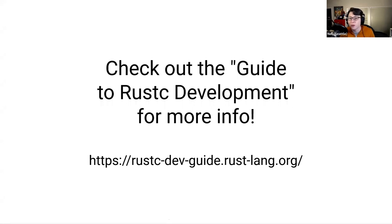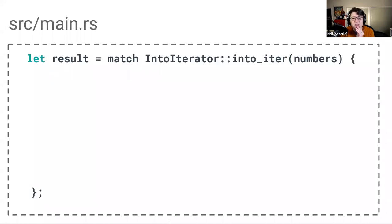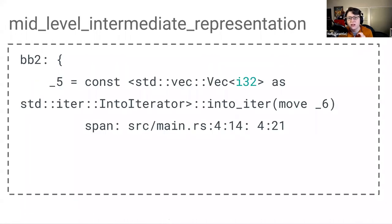Going back to our code, let's go back to our desugared code and zoom in on this match statement, which is assigned to a variable called result. If we looked at the MIR — the mid-level intermediate representation — for this piece of code, it would look similar to this. It's much wordier looking at the actual MIR output, but I've simplified it a bit for the sake of appearing on a slide.